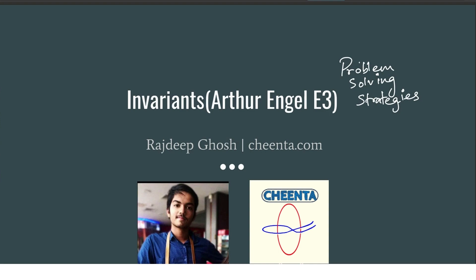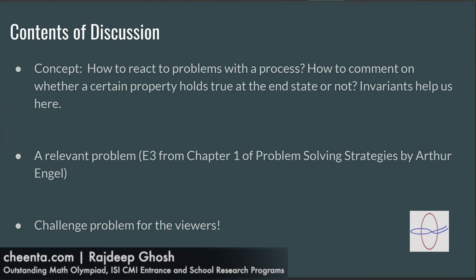The third exercise problem we'll be discussing is how do you react to problems with a process? How do you react to a problem with a certain background process continuing for a certain number of steps? How do you comment on whether a certain property holds true at the end state or not? We want to make predictions about the properties of all the future states. How do we do that? We do it with the help of an invariant. What is an invariant? How is it helpful? How do we construct an invariant? We'll come to that later.